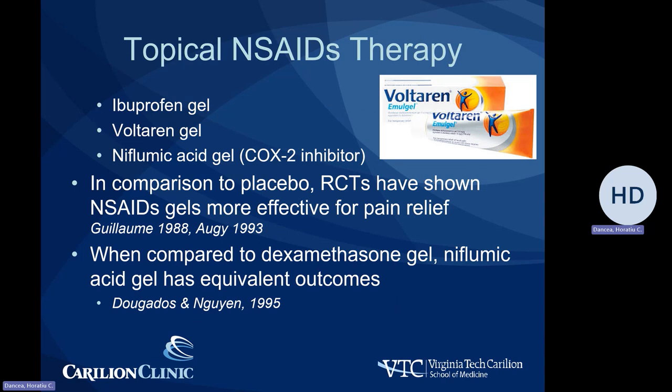Topical non-steroidal anti-inflammatories like ibuprofen gel, commonly used Voltaren gel (which is diclofenac), or niflumic acid gel have been shown to be more effective for pain relief than placebo, and between those compounds they seem to be about equivalent. These are applied adjacent to an affected joint, with the knowledge that penetration of the gel through the skin is limited to about two to three millimeters, so we have to be cognizant at which location we recommend patients to use topical NSAIDs.